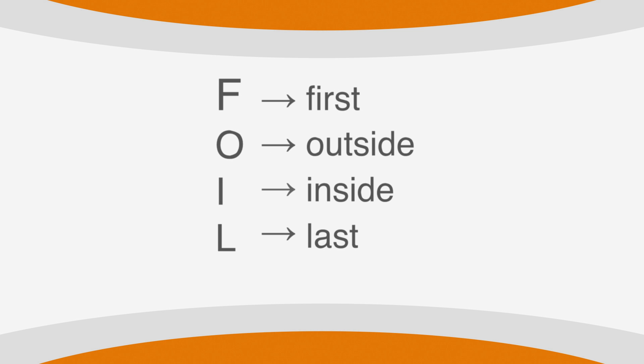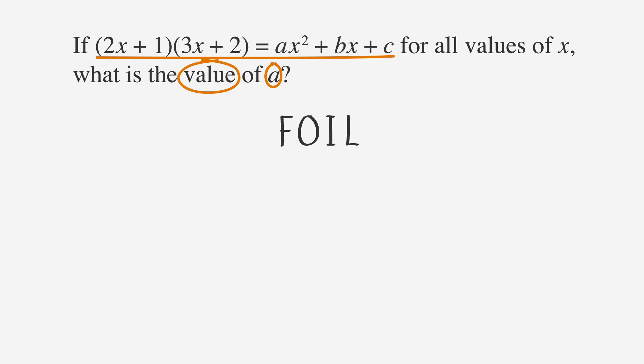In order to solve for a, we'll need to put the left-hand side of the equation into standard quadratic form. With both sides of the equation in standard form, the coefficient of each term will be easy to recognize. This is where the four-step FOIL process comes in. FOIL stands for first, outside, inside, and last. To put the left-hand side in standard form, we'll need to multiply the two expressions in parentheses. First, multiply the first terms, 2x and 3x, which gives us 6x².